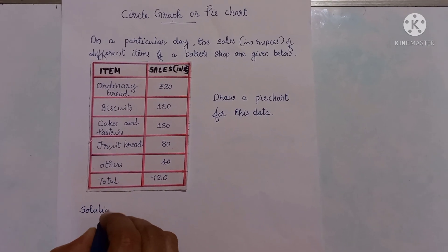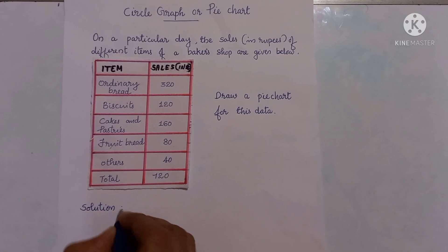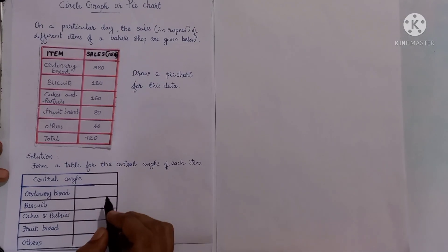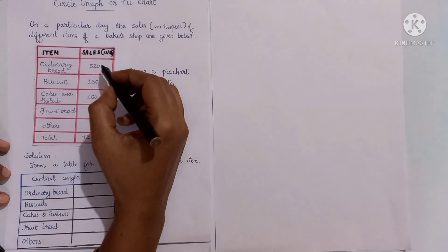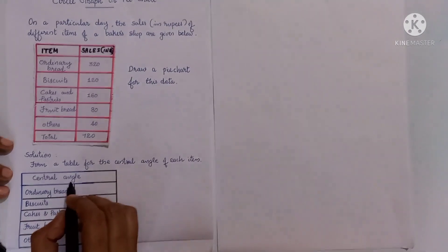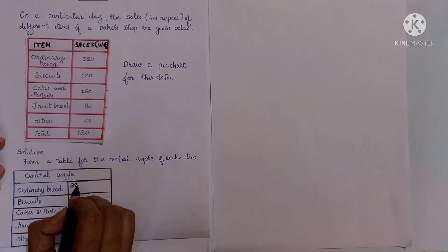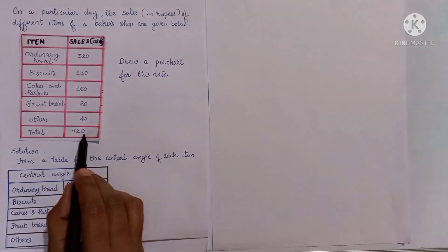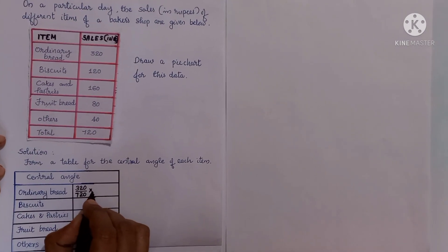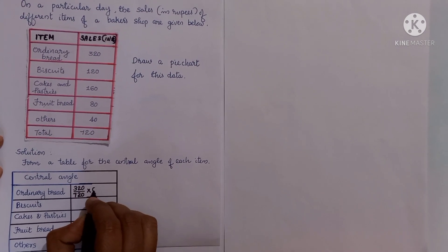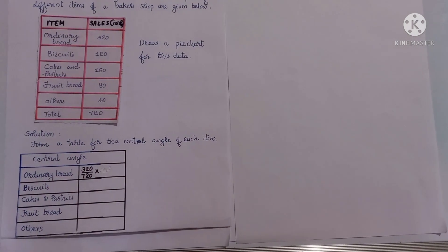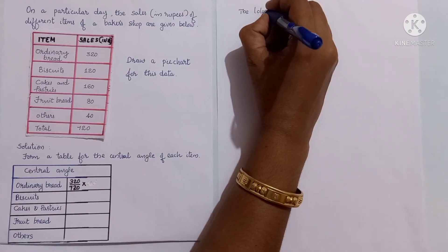For drawing a pie chart, first we have to make a table for the central angle of each item. For finding the central angle, we know that the total angle at the center of a circle is 360 degrees. So we use the formula: (item sales / total sales) × 360 degrees.